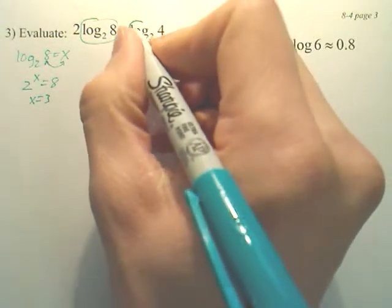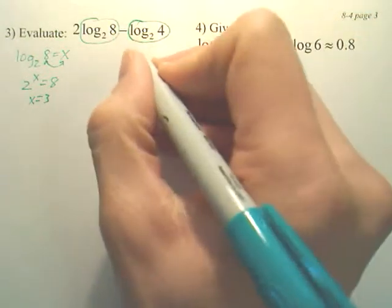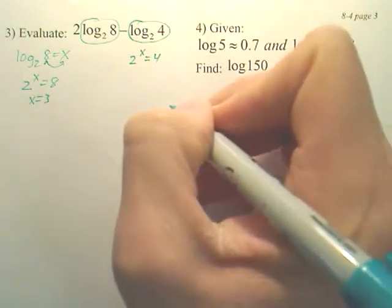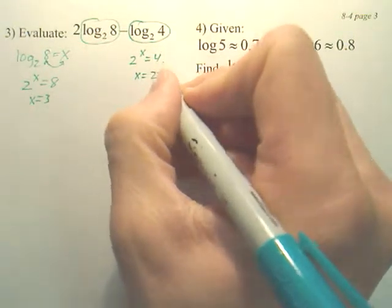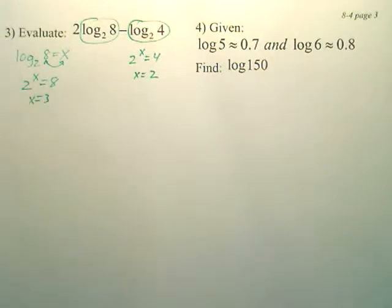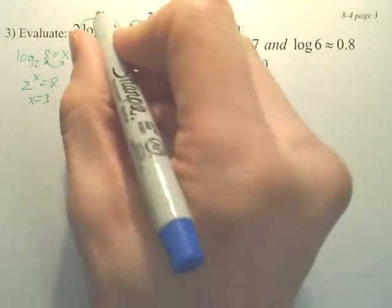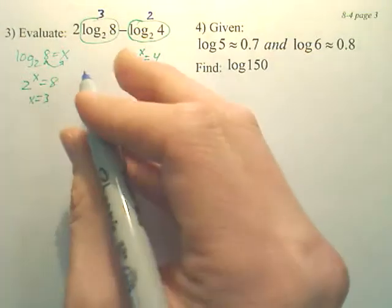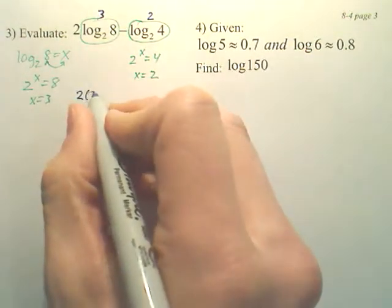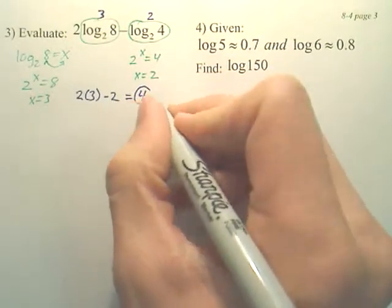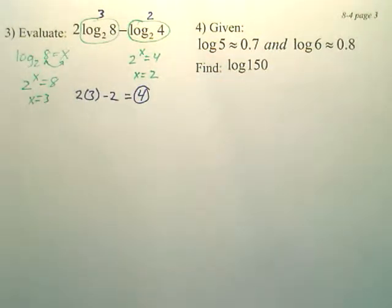What this one is saying over here, it's saying 2 to the what power is 4. That's what this one is saying. What's that equal? That's 2. 2 to the second power is 4. So if we replace this with 3 and this with 2, it's a simple problem. The simple problem is 2 times 3 minus 2, which is 4. That is equal to 4.